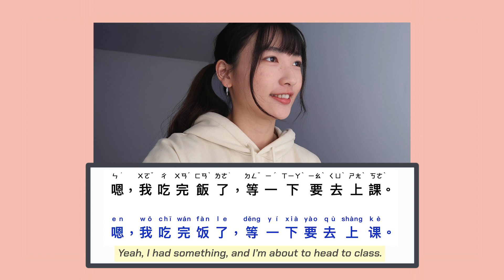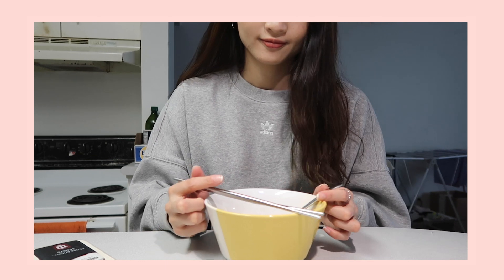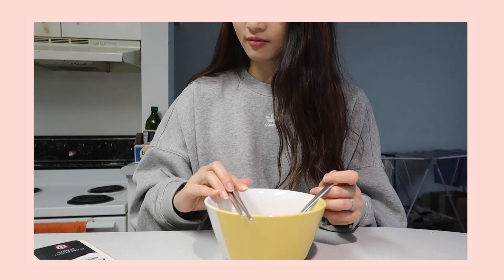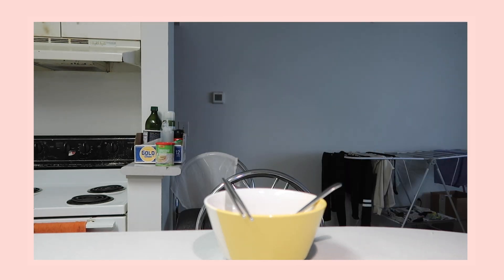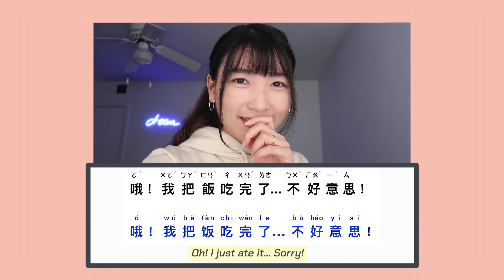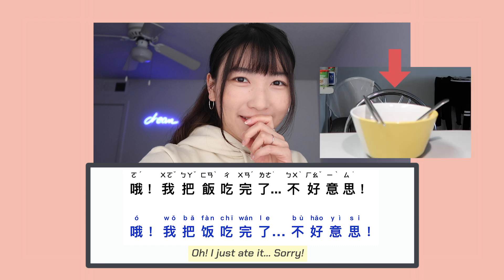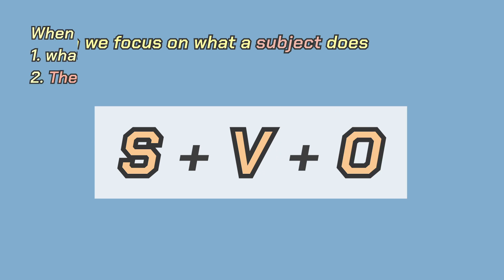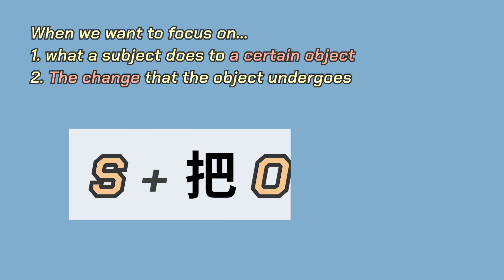So we wouldn't use the 把 construction there. Now let's see when we would say 我把饭吃完了. In this case, the person wanted to talk about what she did to that certain object, and that caused it to be gone. The object is important in their conversation, so 把 is used here. Remember: when we focus on what a subject does, we use the SVO structure. However, if we want to focus on what a subject does to a certain object and also the change that the object undergoes, we use the 把 construction.